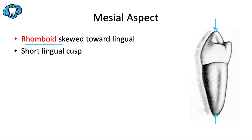Another distinguishing characteristic compared to the other premolars is that the lingual cusp is a lot shorter and less developed than its facial counterpart. The lingual cusp is approximately two-thirds the height of the facial cusp — it's almost like the cingulum of a canine. This is the biggest discrepancy in cusp heights of all the teeth in the mouth.